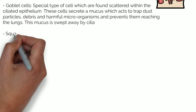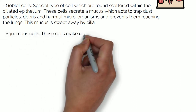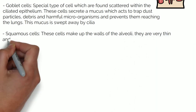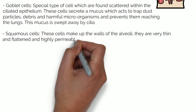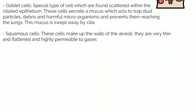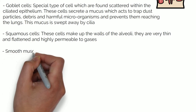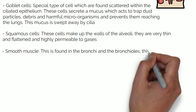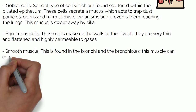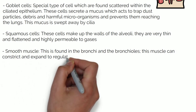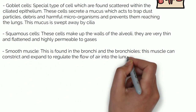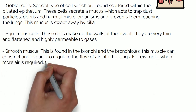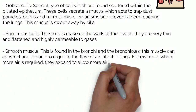Squamous cells make up the walls of the alveoli. They are very thin, flattened and highly permeable to gases. Smooth muscle is found in the bronchi and bronchioles. This muscle can constrict and expand to regulate the flow of air into the lungs — for example, when more air is required, they expand to allow more air in.